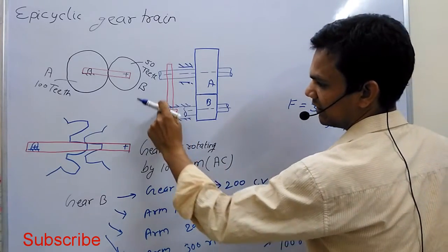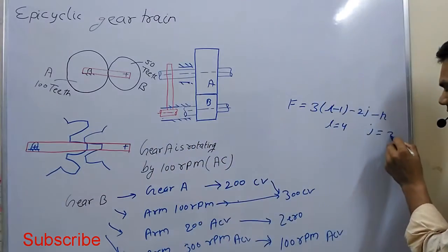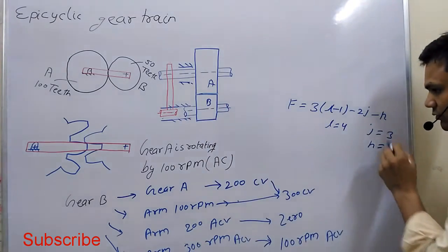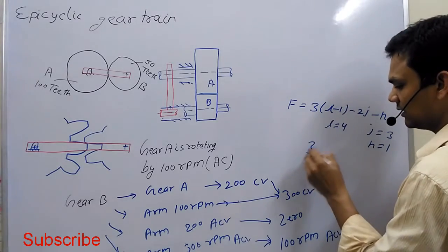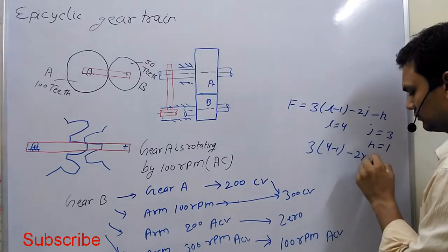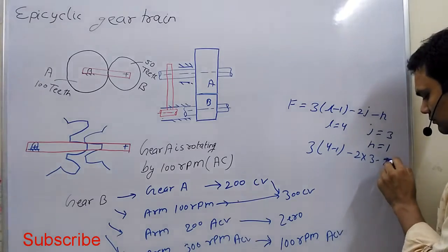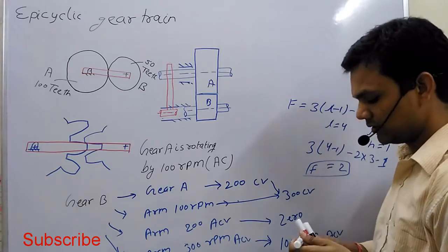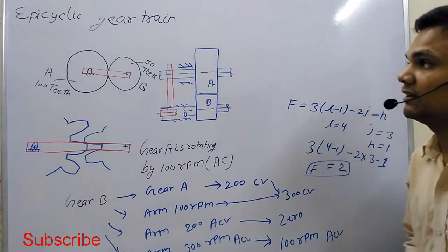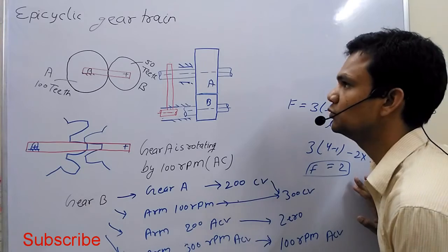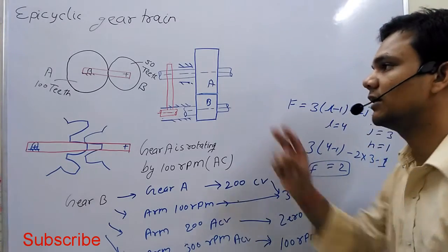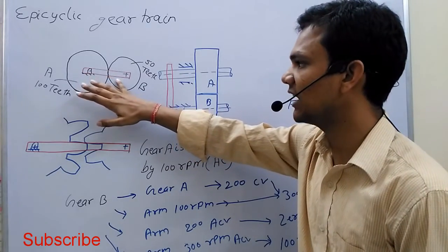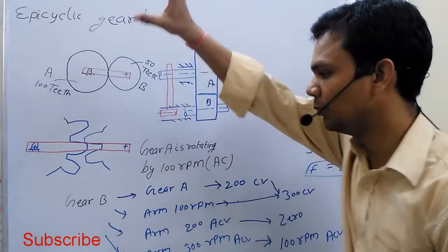There is one higher pair in the gear. If we put the values in this formula, the degree of freedom of the epicyclic gear train is two. So you can see, we control two links.